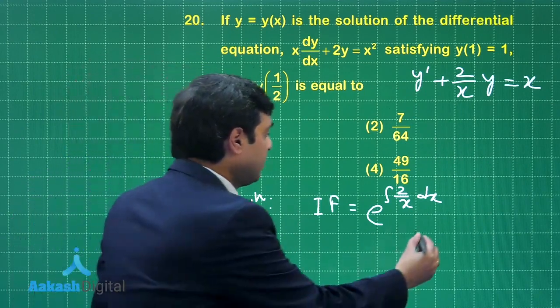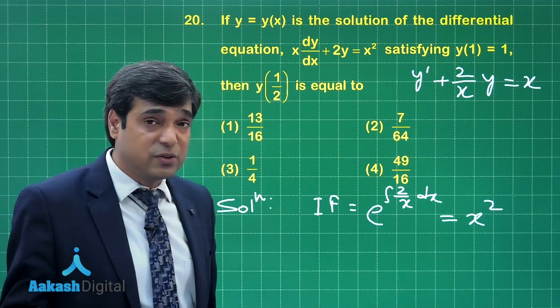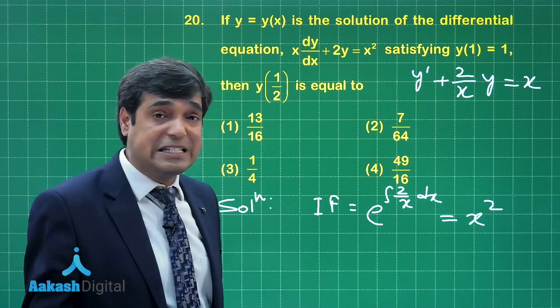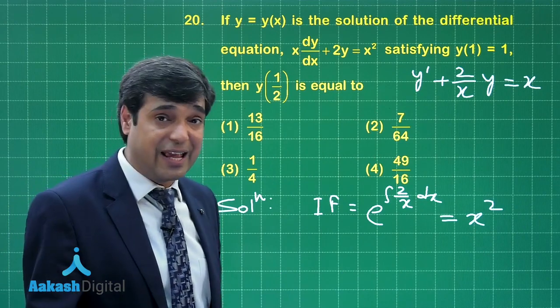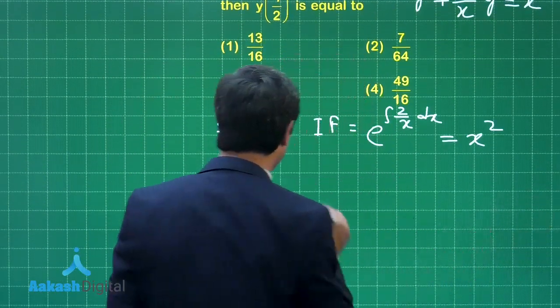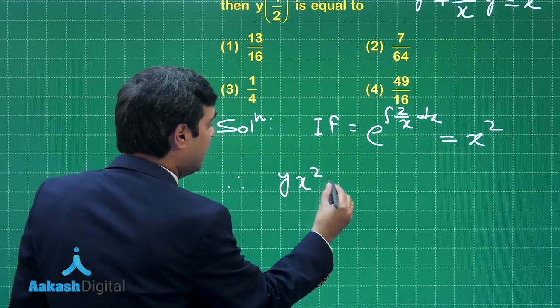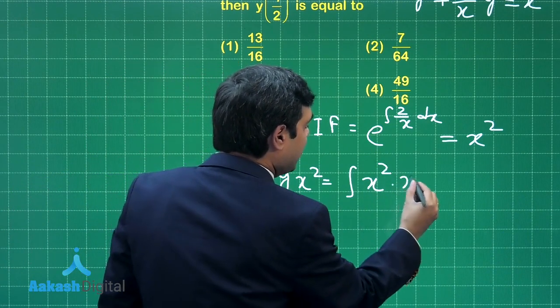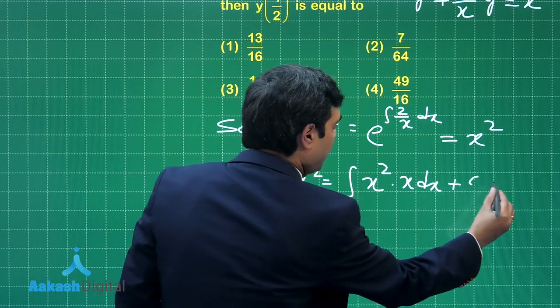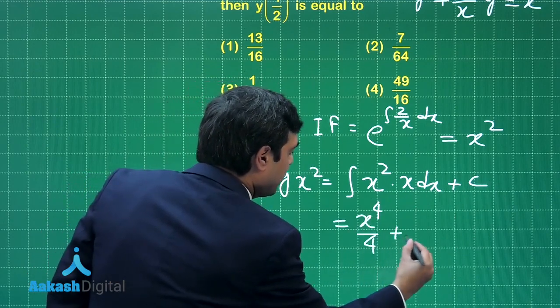Now we have this term giving me x² as integrating factor. So what is the solution? y multiplied with integrating factor equals integral of q into integrating factor dx plus constant. So let us write down the solution part. Therefore, yx² = ∫x² · x dx + c, or x⁴/4 + c.